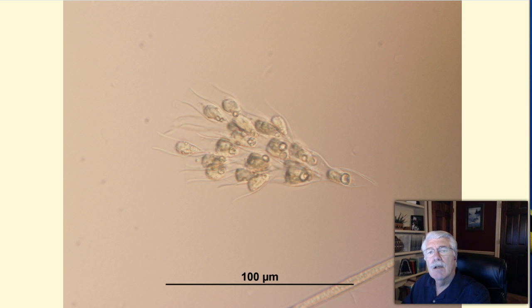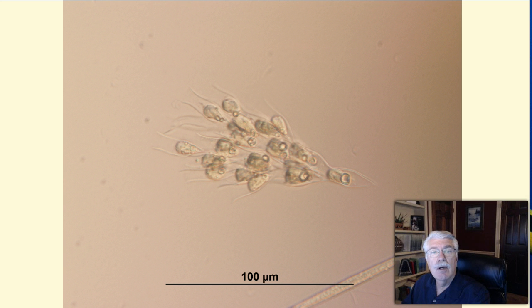There are many kinds of phytoplankton. One group, called dinoflagellates, use a whip-like tail called a flagella to move about in the water. Their bodies are covered with a shell.